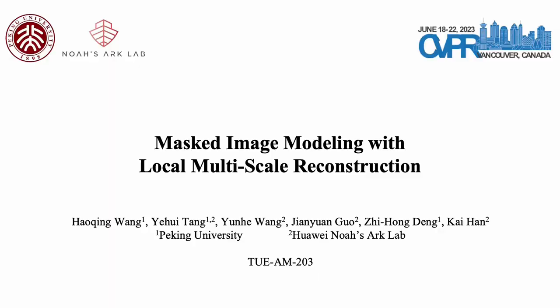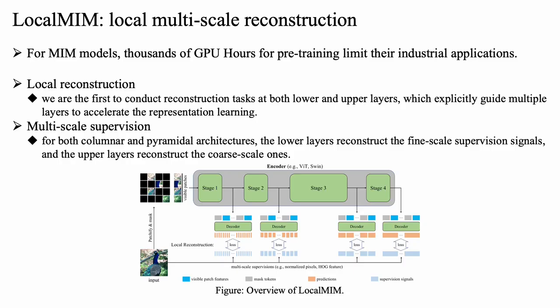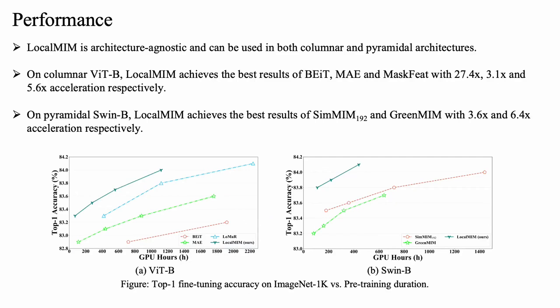Hello everyone, I'm Haoqing Wang from Peking University. Today I will present our paper, Masked Image Modeling with Local Multiscale Reconstruction. For masked image models, thousands of GPU hours for pre-training limit their industrial applications. To this end, we propose a new pre-training task to accelerate pre-training: Local Multiscale Reconstruction. We are the first to explicitly guide both the lower and upper layers using reconstruction tasks. We propose using multi-scale two-way signals instead of original single ones. Concretely, the lower layers reconstruct fine-scale signals and the upper layers reconstruct coarse-grained ones. Local MM is architecture-agnostic and can be used in both column and parallel architectures. Compared with existing methods, Local MM achieves better results with 30x acceleration.